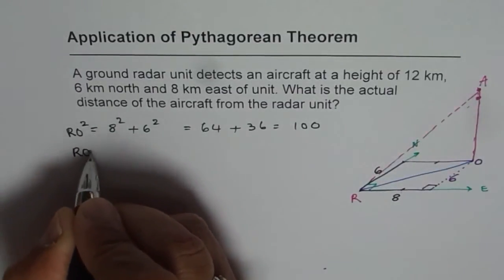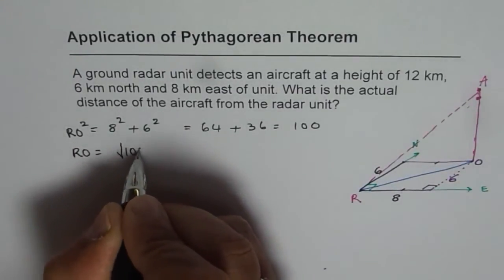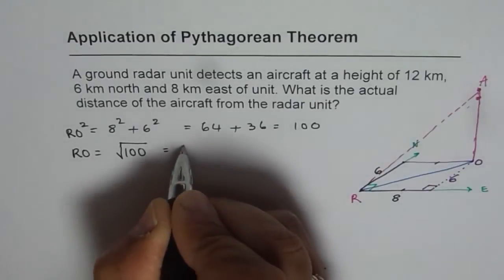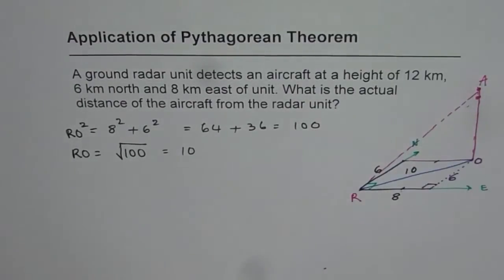Now 8 square is 64, 6 square is 36, that is 100. So RO is equal to square root of 100, which is 10 km. So this is 10 km.